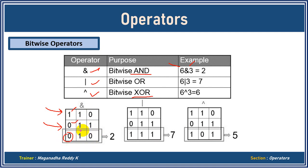When you convert this binary number to decimal, you will get 2. That's how you get the bitwise AND result. It works with bits because we are converting the decimal number to binary and performing the AND operation bit by bit — that's why it's called a bitwise operator.